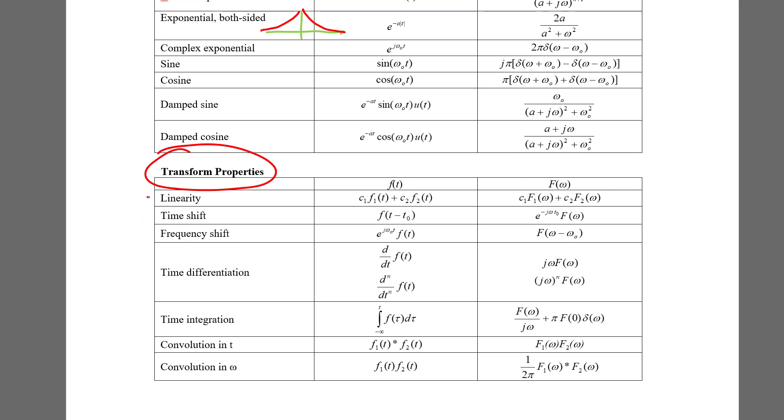Let's start off with linearity. Linearity says, I'll give an example, it's written here, it says that if you know what a transform is of f1 of t, if you know this is its Fourier transform, then if you multiply it by a constant, you just multiply the Fourier transform by the same constant.